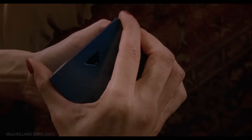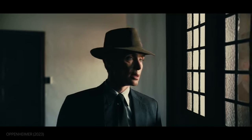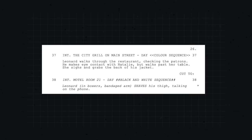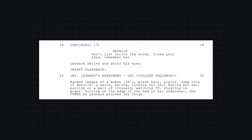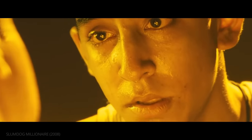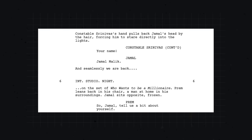Screenplay formatting can also be affected by unique plot devices. Not all films tell their stories linearly — many movies, for example, contain flashbacks. Christopher Nolan's Memento is a prime example; in his script, he differentiates between the two timelines with italics. For individual flashbacks, he writes 'insert flashback' followed by the scene heading. For a brief flashback, a writer may simply write 'flashback' followed by the cutaway. But a flashback or flashforward doesn't have to be clearly marked. In Slumdog Millionaire, Simon Beaufoy doesn't label his time jumps — instead writing 'seamlessly we are back.'